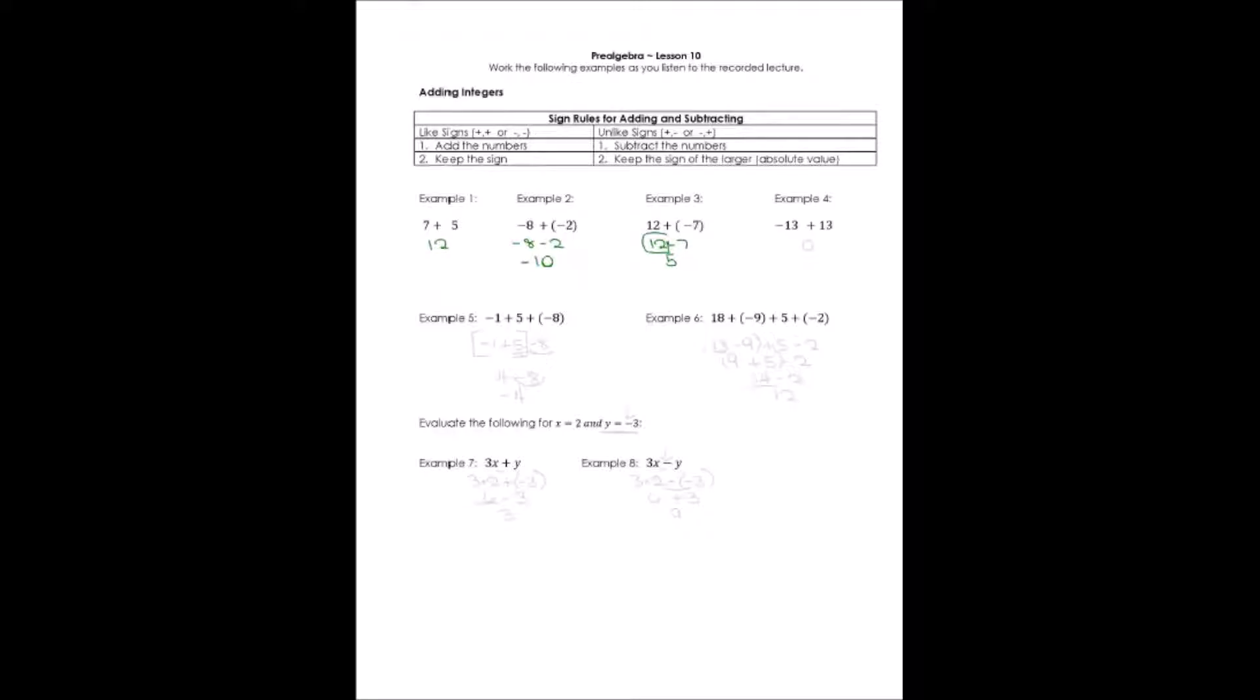We'll look at number 4, example 4. We have a negative and a positive. We're going to subtract those two numbers. Well, 13 minus 13 is going to give us 0. And this is the one case where we do not have to put a sign down because 0 does not have a positive or negative sign on it. It's just 0.